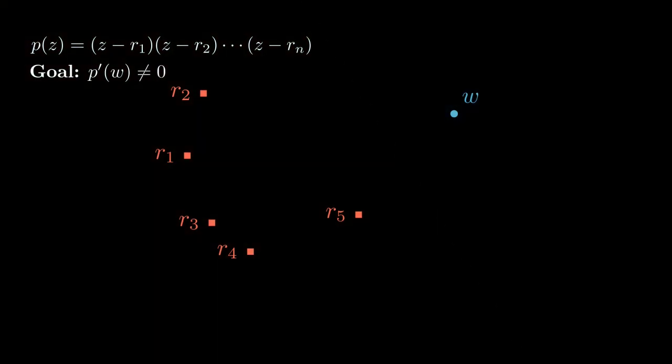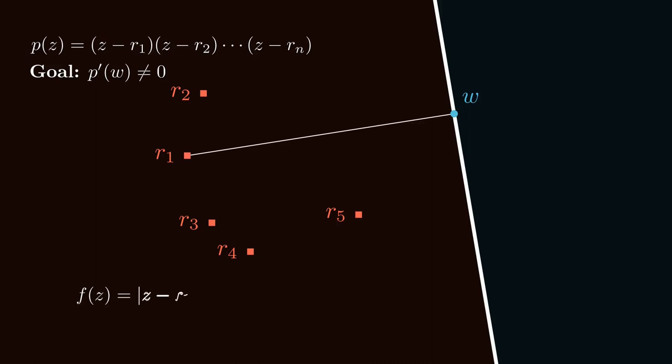So I'm going to draw a line segment from my first root, r1. I'm going to draw a line segment from r1 to the point w, and then I'm going to draw a line perpendicular to that segment through the point w. Now consider the helper function f of z equals the absolute value of z minus r1. So f is just measuring the distance between its input and the point r1, the first root.